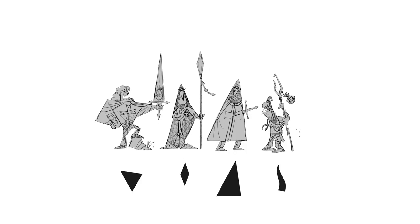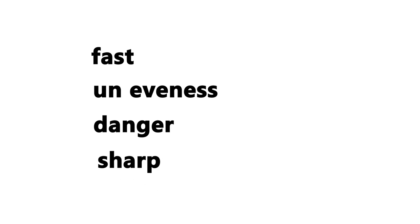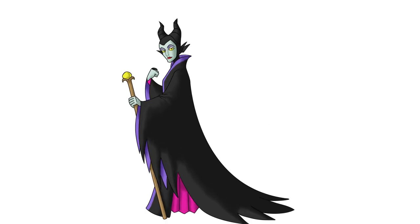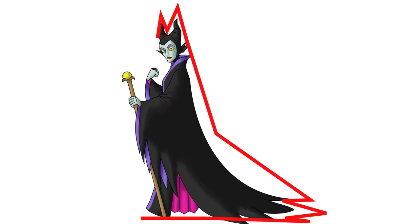The third one is the triangle. Triangle shows force, unevenness, danger, and sharpness. So most villain characters are designed using triangles. This character from Sleeping Beauty — most Disney villains are made this way. To represent danger, we can use more sharp forms in the characters. Scar from Lion King is a great example. So don't forget to use shapes in your characters.